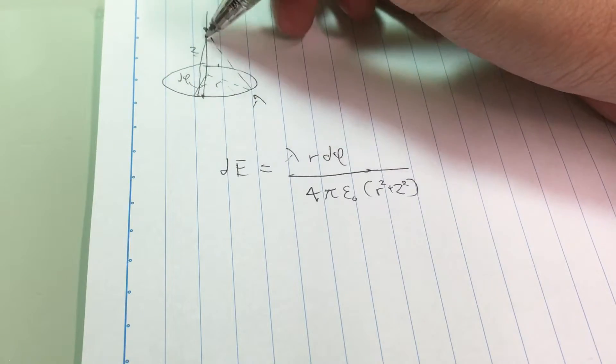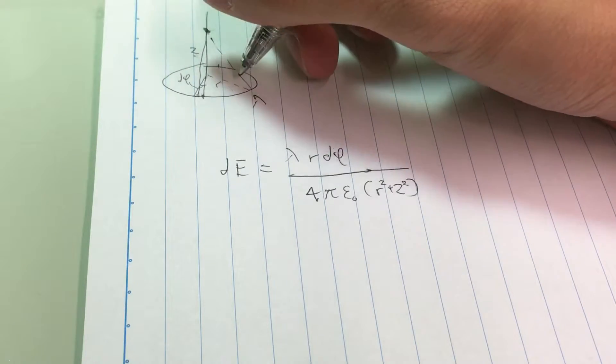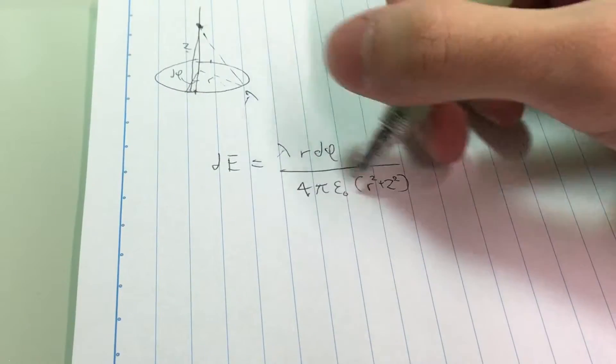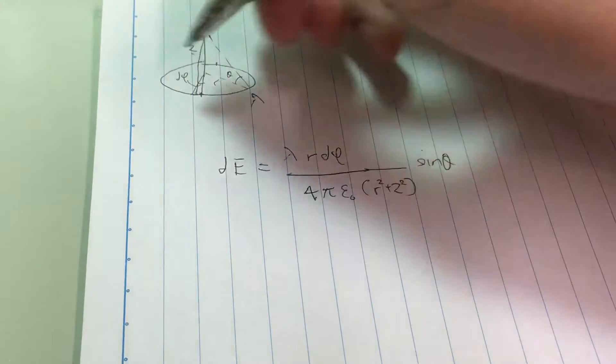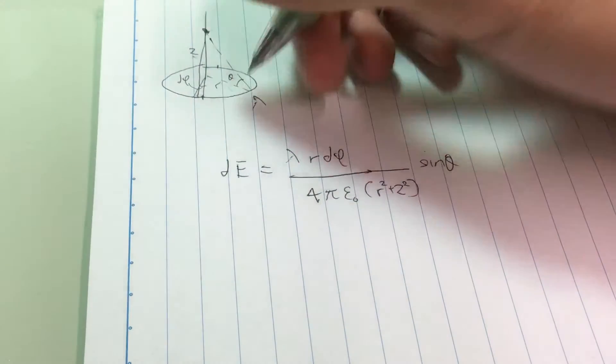All we're left with is the vertical component. What's the vertical component? It's this multiplied by the sine of this angle. We'll call that angle theta.